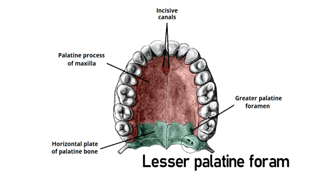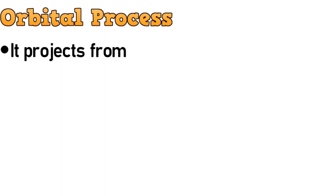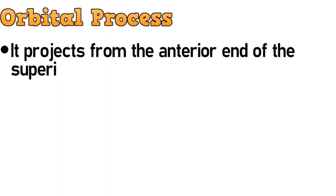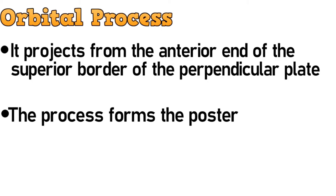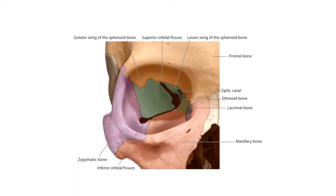Next is the orbital process. It projects from the anterior end of the superior border of the perpendicular plate, and it forms the posterior part of the inferior orbital wall. This process projecting from the superior border of the perpendicular plate is the orbital process, and this is how it forms the posterior part of the inferior orbital wall. This small shaded part is the orbital process of the palatine bone.